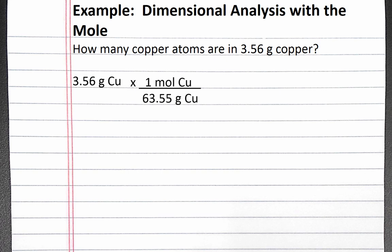To get rid of our units of grams of copper, it has to go on the bottom in our conversion factor, and one mole of copper goes on top. We now have moles of copper.